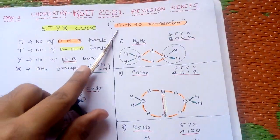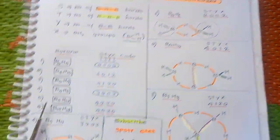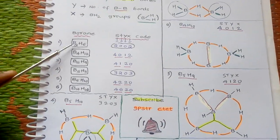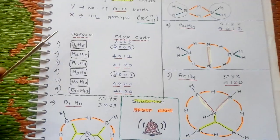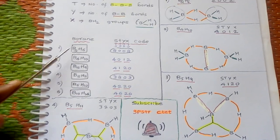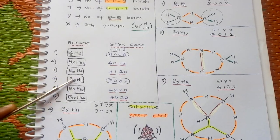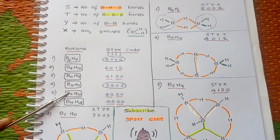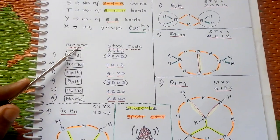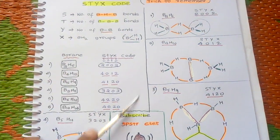The trick I have made is: first you have to remember the boranes. These are diborane B2H6, B4H10, B5H9, B5H11, B6H10, and B10H14. For remembering the STYX codes of these boranes, I use a phone number style memory trick.